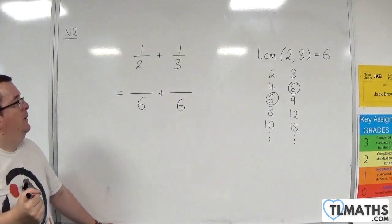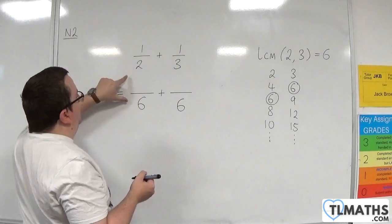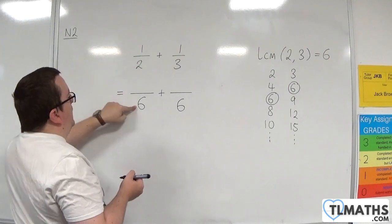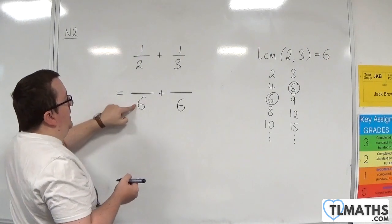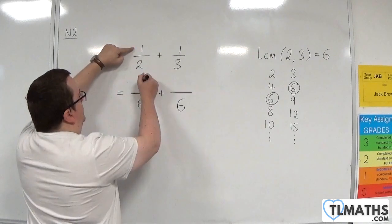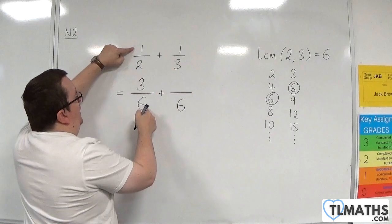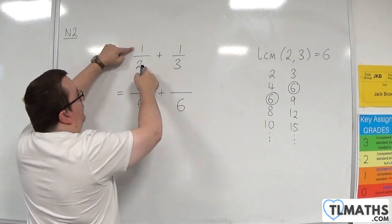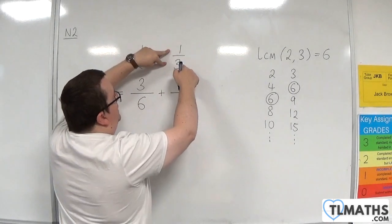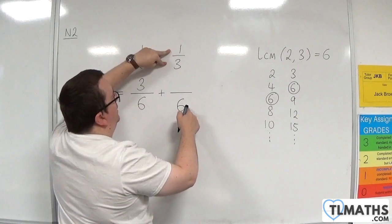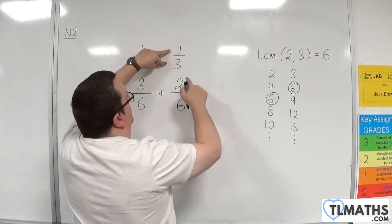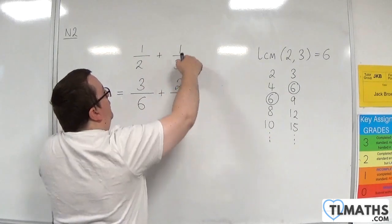Now, from 1 half to something over 6, I need to multiply the denominator by 3. 2 times 3 is 6, so you must also multiply the numerator by 3. So 3 sixths is the same as 1 half. Now, as for 1 third, 3 needs to be multiplied by 2 to get to 6, so 1 needs to be multiplied by 2. So 2 sixths is the same as 1 third.